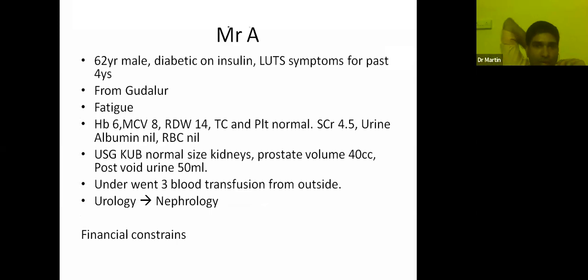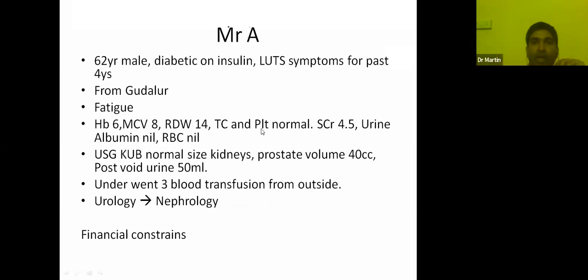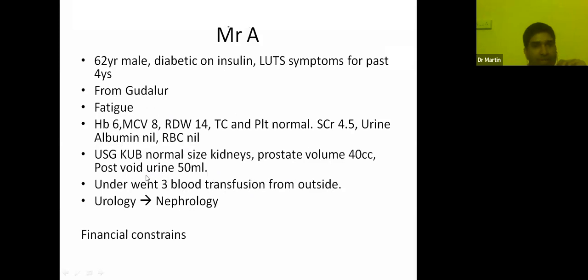Case 5: A 62-year-old male diabetic on insulin, with lower urinary tract symptoms for 4 years, presented from a rural area with fatigue. He was diagnosed with anemia at his local hospital. MCV was 80 — normocytic normochromic anemia. ESR was elevated. Ultrasound showed kidneys to be normal in size. Three blood transfusions had been given for the severe anemia and fatigue. The patient also had bone pain, weight loss, and tiredness. This pattern is very familiar — it is a pattern usually seen in patients with multiple myeloma.